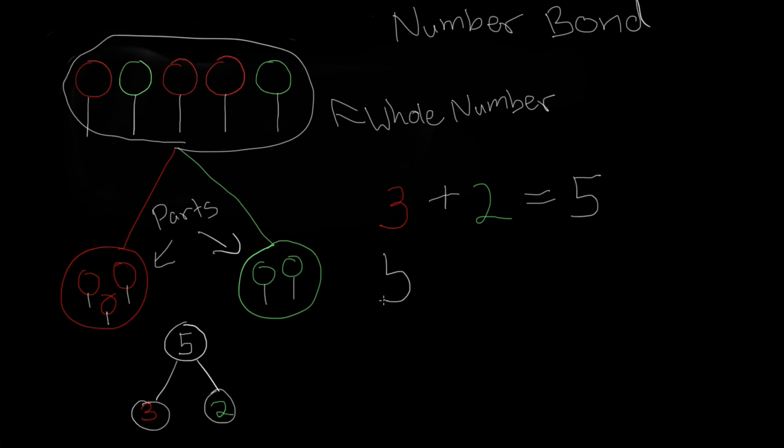Well, in that case, we would start with our whole number, which is five, and take away the two green ones because we gave them to our friend. And if we took them away, that would be like crossing out this part, which would leave us with the three red lollipops. So that's a simple intro to number bonds. We'll see you next time.